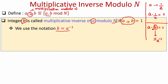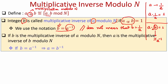We use the notation B equals A inverse (A to the power minus 1). This does not mean B equals 1 over A — students often get confused by this. A to the power minus 1 is another integer B which, when multiplied by A and then taken modulo n, gives 1. It is easy to see that if B is the multiplicative inverse of A modulo n, then A is also the multiplicative inverse of B modulo n.